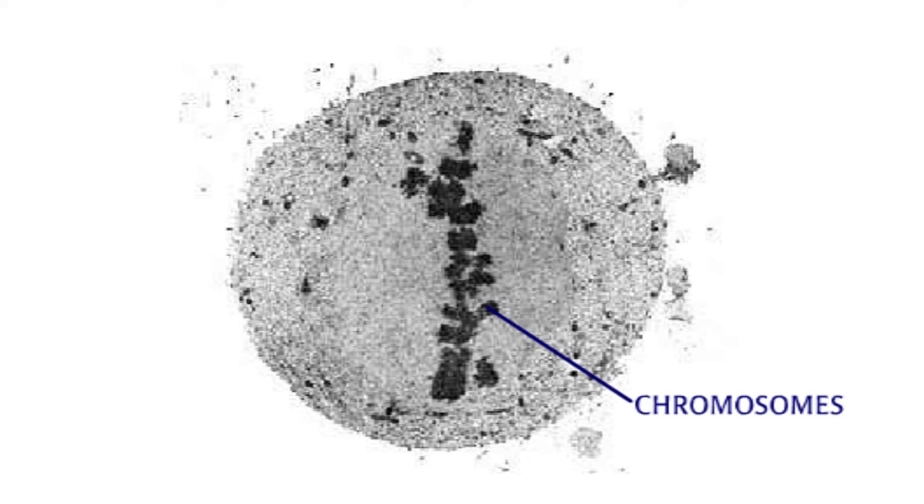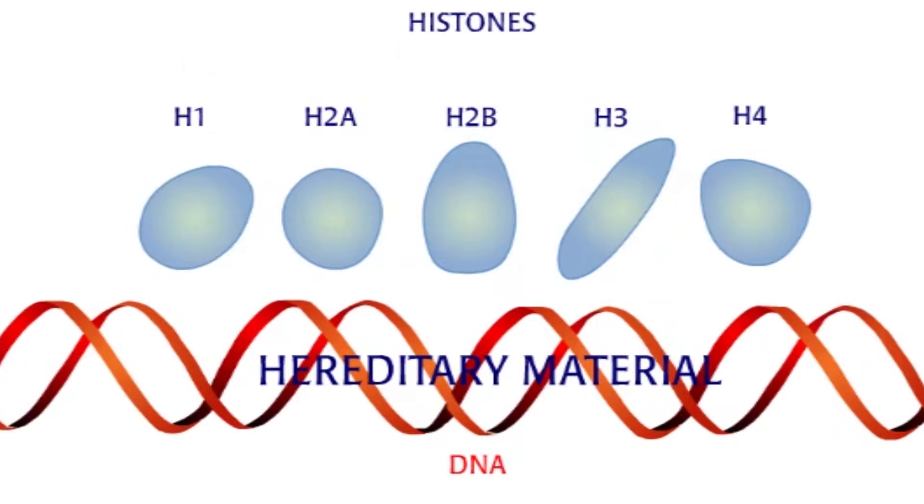This electron micrograph shows chromosomes lined up in the middle of the cell. The presence of histones in the nucleus of cells was part of a debate about which molecule, DNA or protein, is the hereditary material. Of course, DNA turned out to have that distinction.